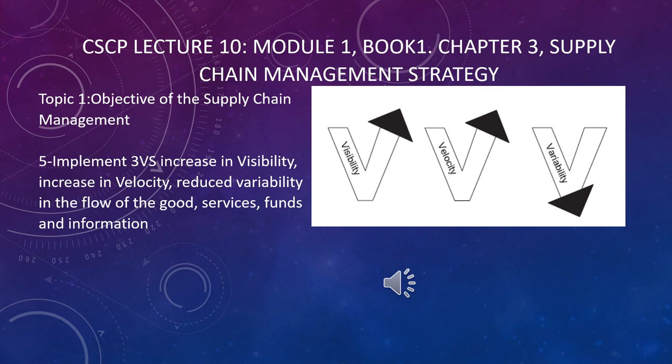The main objective here is to reduce variability — the deviation from standard results. For example, if our sales estimate is 500 diapers a day but only 200 are sold, that is variability. This is very critical in supply chain. For more detail, you can go back to lecture nine. Thank you very much and have a nice day.